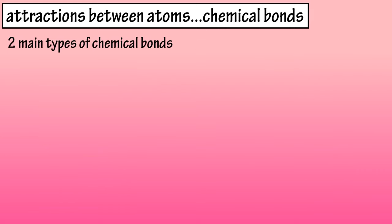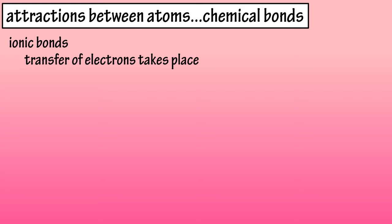There are two main types of chemical bonds: ionic bonds and covalent bonds. Ionic bonds are bonds where the transfer of electrons takes place. Let's see how this type of bond works.